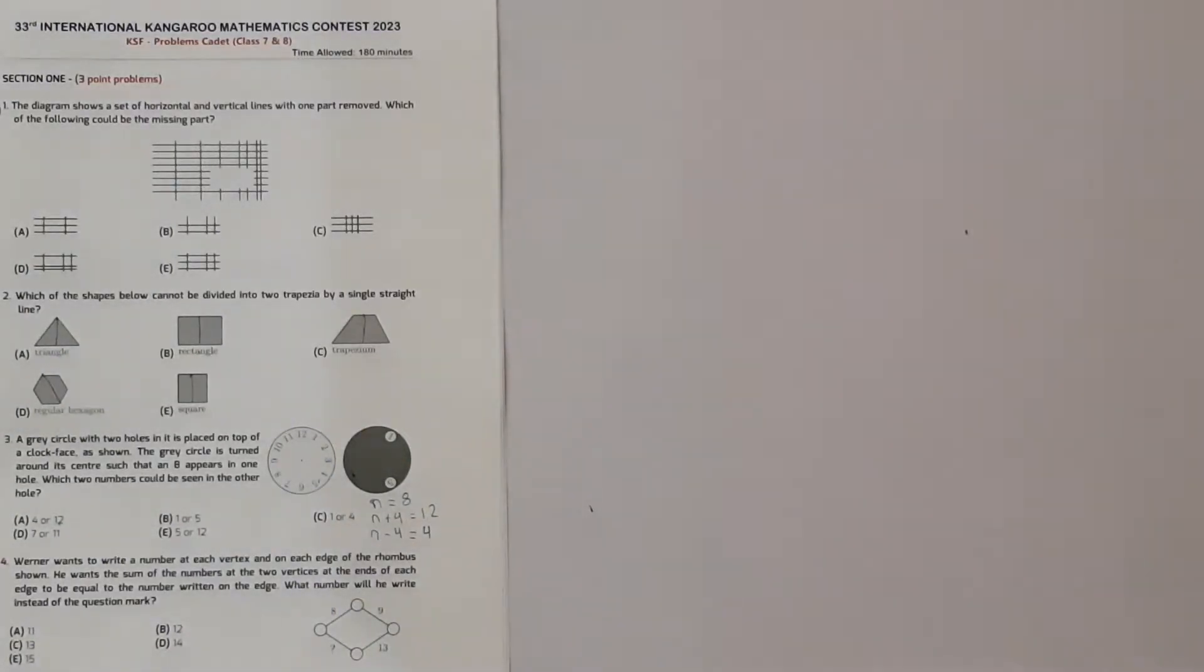So the question is, Wagner wants to write each number at the vertices and at the edges of the rhombus and he wants the sum of the numbers of two vertices at the ends of each edge to be equal to the number written on this edge. So what number will he write in the place of the question mark?